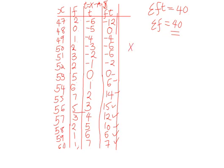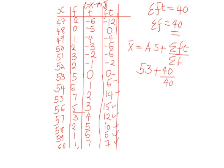So now the mean of this data will be given by the assumed mean plus sigma FT over sigma F. So the assumed mean was given as 53 plus, we have the value for sigma FT, which is 40, divided by the value for sigma F, which is 40. So we have 53 plus 1, and this gives us 54.